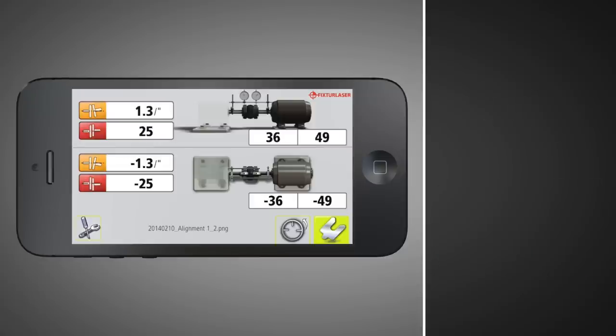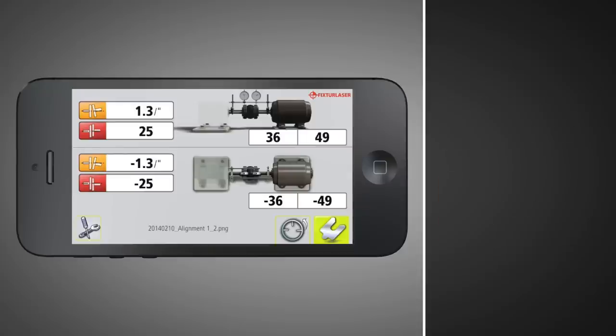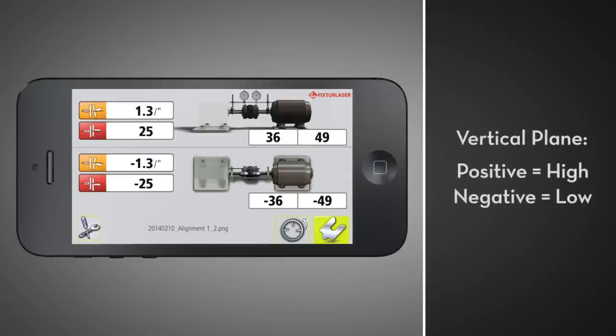The alignment results are now displayed. The icons are color-coded and show the relative position of the shafts. The objective is to eliminate misalignment, which will change any yellow or red icons to green. Green indicates the alignment value is within tolerance. The offset at the feet is also displayed. In the vertical plane, positive values mean that the movable machine is sitting high, and negative values mean sitting low.